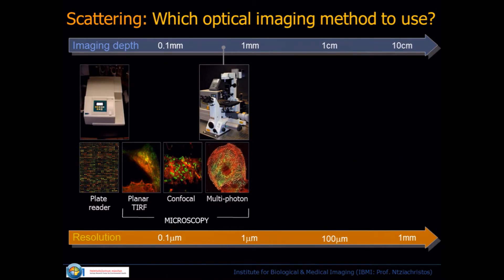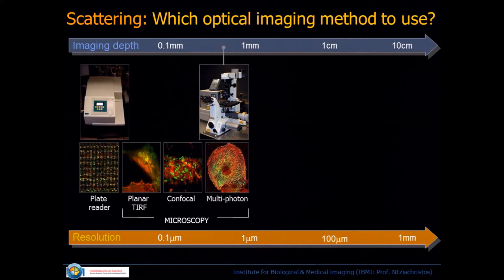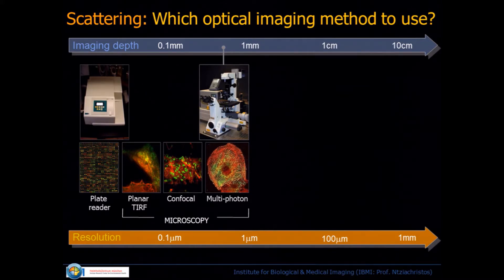Opto-acoustic imaging is also an optical imaging method, and what we're doing is similar to the previous two talks where we're trying to go beyond microscopy in terms of depth. Even two-photon microscopy, which is probably the most advanced way of going into deep tissue, will penetrate fully scattering tissue of about half a millimeter. Opto-acoustic is also an interesting method, especially when it tries to address this scattering problem.